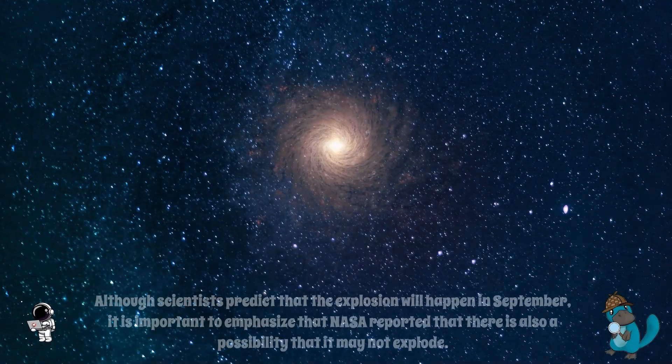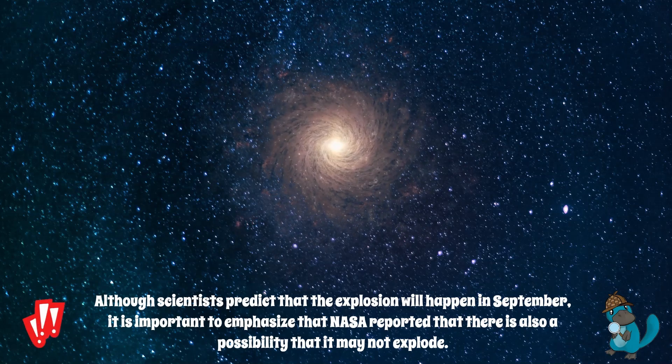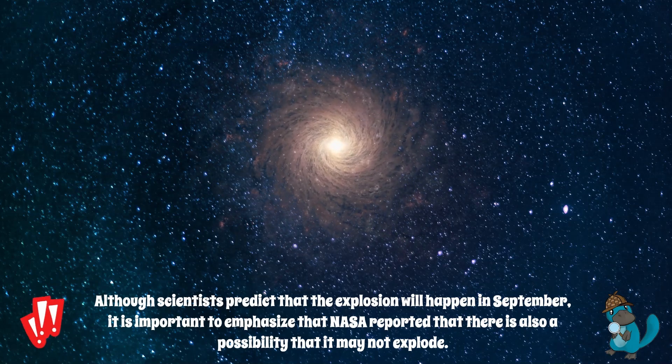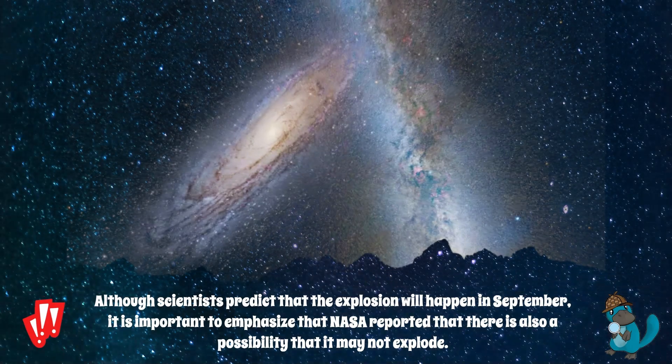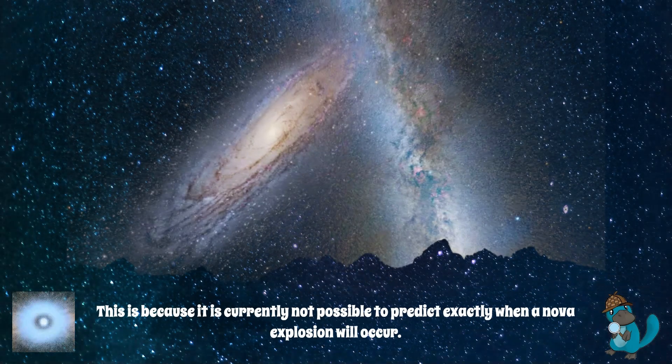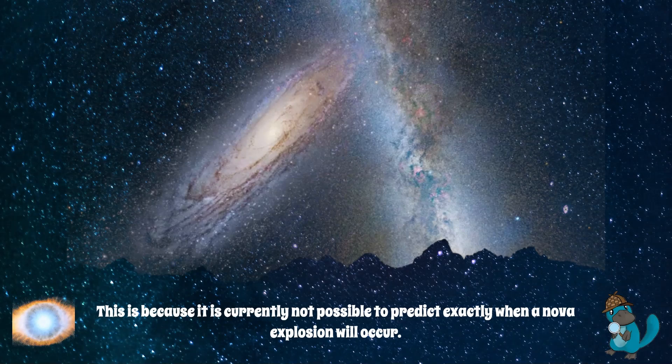Although scientists predict that the explosion will happen in September, it is important to emphasize that NASA reported that there is also a possibility that it may not explode. This is because it is currently not possible to predict exactly when a nova explosion will occur.